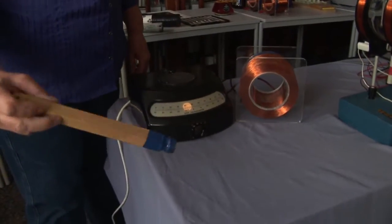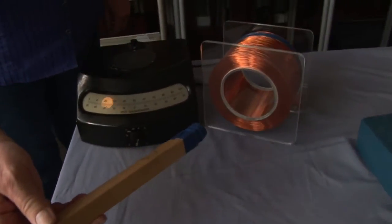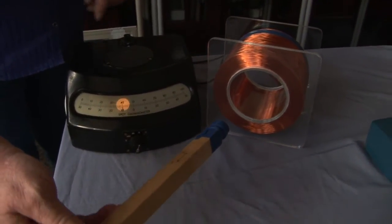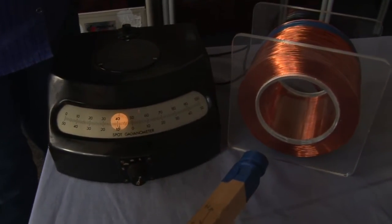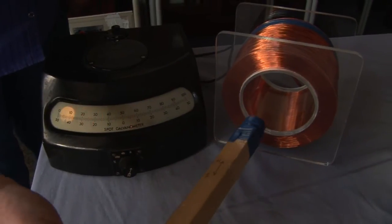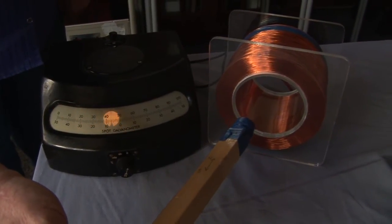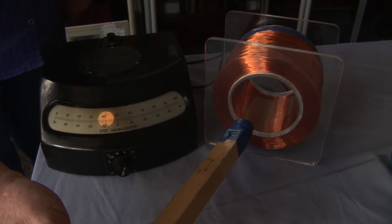If I bring this magnet towards the copper wire, the light swings. Once I hold it still, it goes back to its original position. It's only when the magnet is moving that we actually get a current induced in the copper wire.